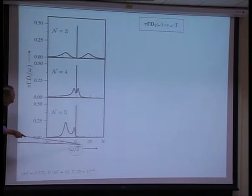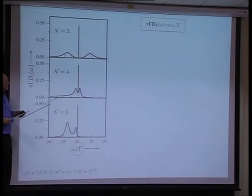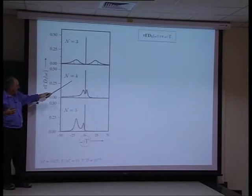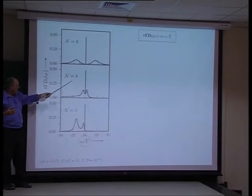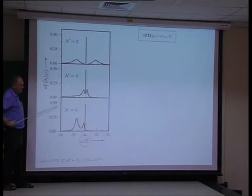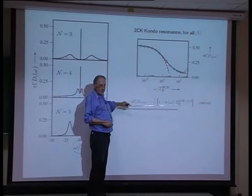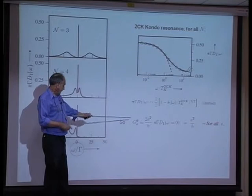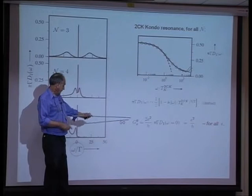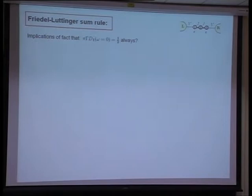This is seen very vividly in all the single-particle dynamics. The spectrum pi-gamma D1 of omega versus frequency in units of hybridization strength is shown sitting in the middle of the three-electron Coulomb blockade valley — a particle-hole symmetric point — and in the four- and five-electron valleys. In all cases, the key point is that you have the half-unitarity limit for the conductance and single-particle spectrum at the Fermi level. The scaling behaviour in all cases follows the canonical two-channel Kondo form regardless of the bare epsilons, giving a characteristic square-root approach to the half-unitarity value of conductance.